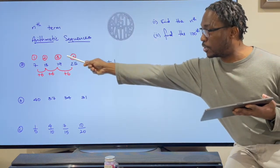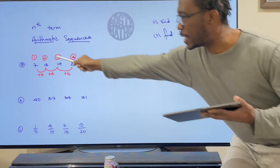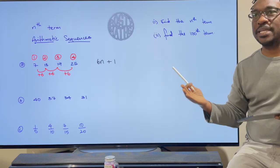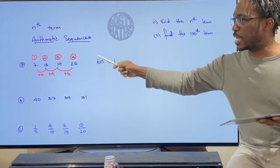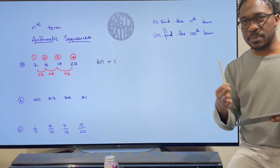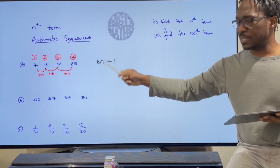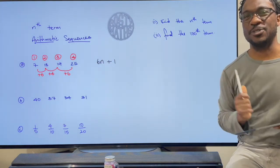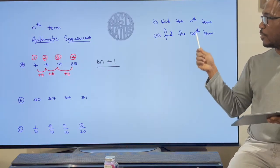Here's Method 2: it's going up in sixes so write 6n, then substitute. Since n is the position of each term — 1, 2, 3, 4 and so on — do 6 times 1. I should get 7 but I don't, so I need to add 1 to make 7, because 6 times 1 is 6 and then you add 1. Double-check with the second term: 6 times 2 is 12, add 1, and you do get 13. So our nth term is 6n + 1.